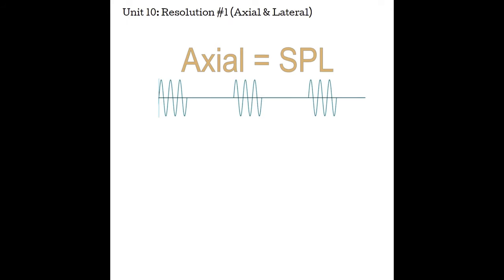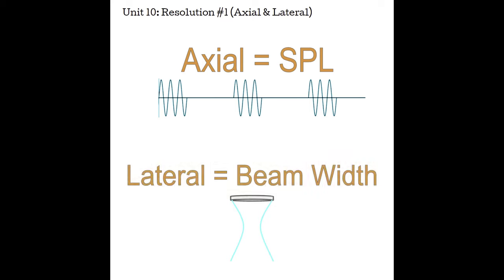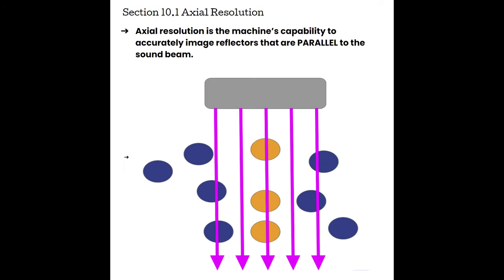This lecture is going to focus on axial and lateral resolution. Throughout the first few units of this course, you may recall hearing these terms. Axial resolution is highly dependent on spatial pulse length, where lateral resolution is dependent on the beam width — two topics we've already covered. Let's start with Section 10.1, Axial Resolution.